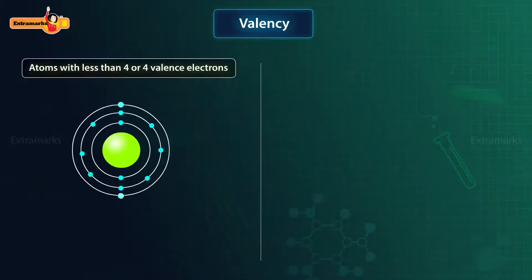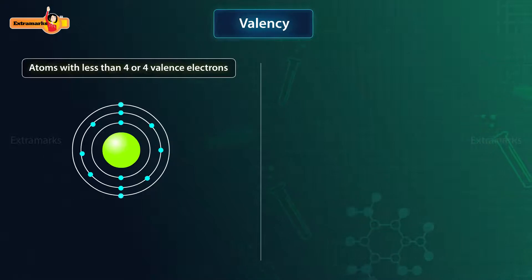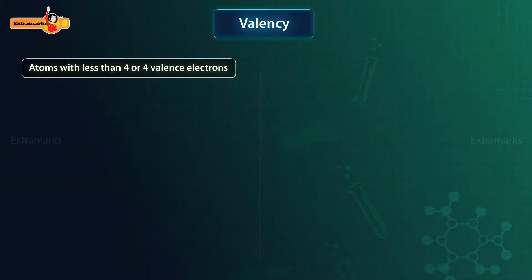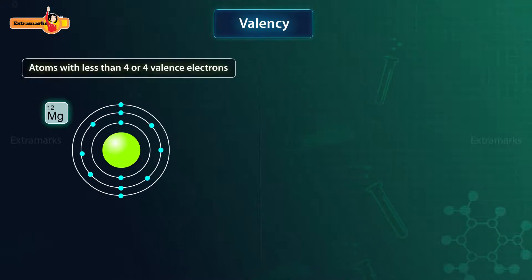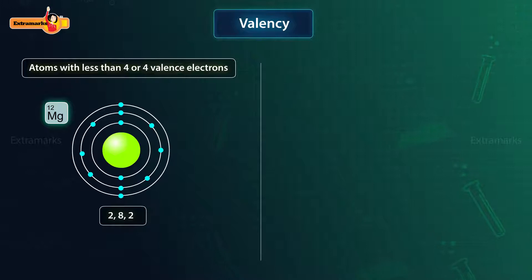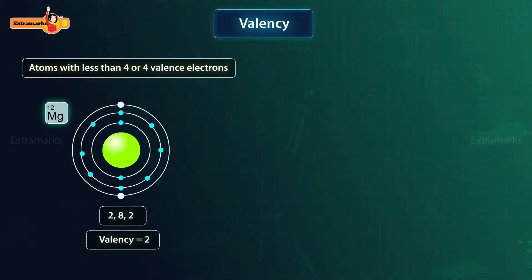For atoms having four or fewer valence electrons, the valency is equal to the number of valence electrons. For example, magnesium has the electronic configuration 2, 8, 2. There are two electrons in its valence shell, hence the valency of magnesium is 2.